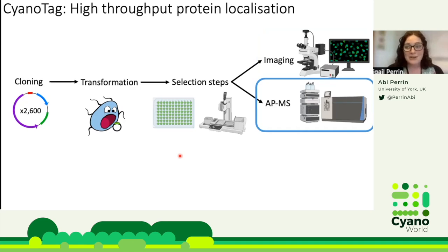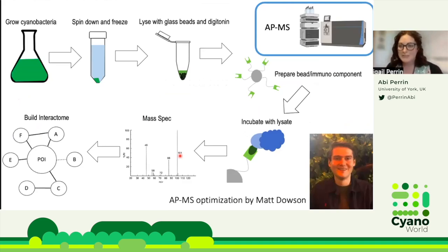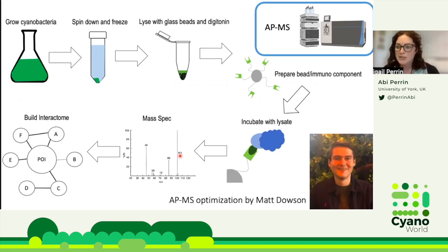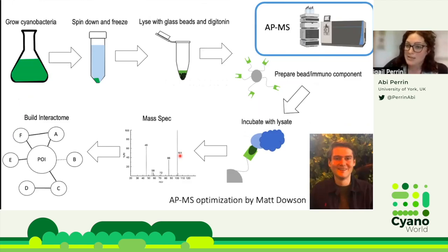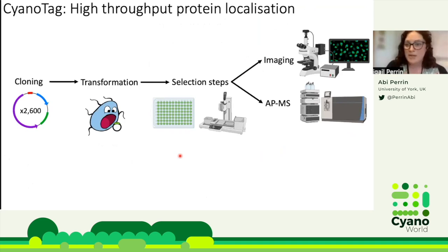Thanks to a relatively new technician in our lab, we've started to optimize the affinity purification mass spectrometry protocol. This is the least high-throughput step in the process because everything else can be optimized to a 96- or 12-well format, but the protocol involves growing around 50 millilitres of cyanobacterial culture — the biggest barrier to higher throughput. We pellet the cells, lyse them with glass beads, then load the lysate onto beads hybridized to an anti-mNeonGreen nanobody. This nanobody binds to our tagged protein and carries with it any bound proteins from the lysate, which we then analyze using a rapid data-independent acquisition mass spectrometry approach to build a protein interactome.